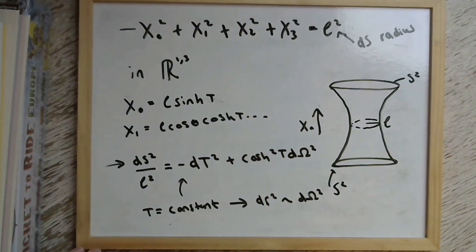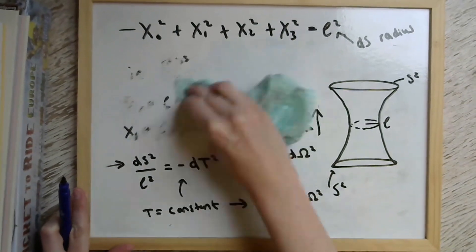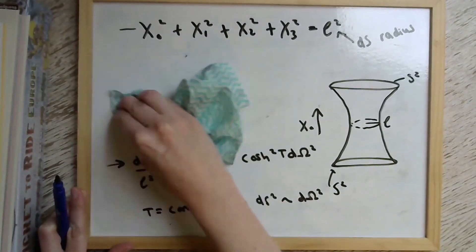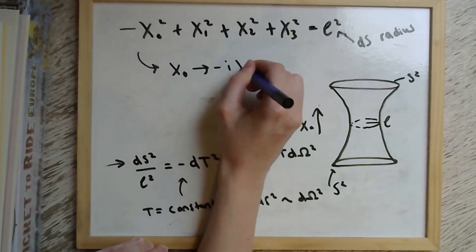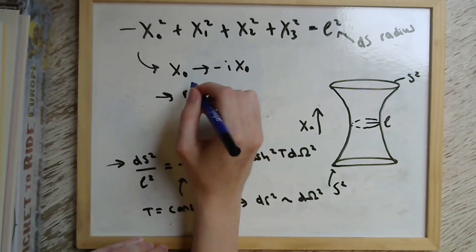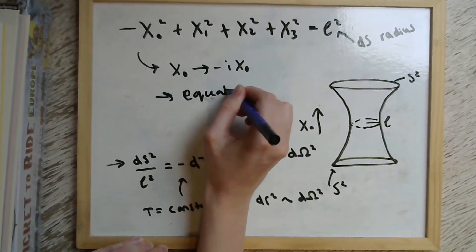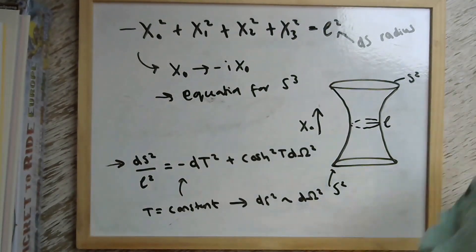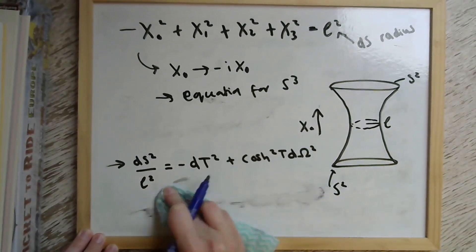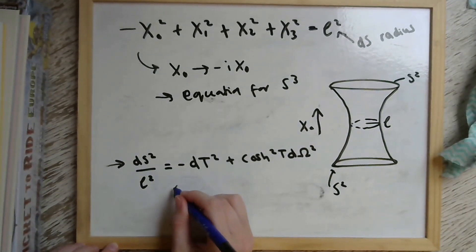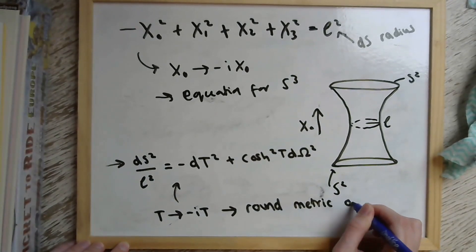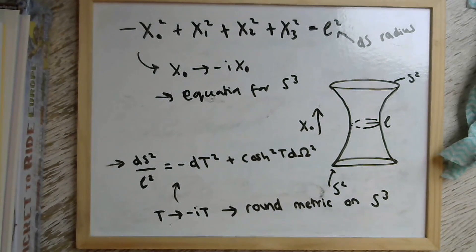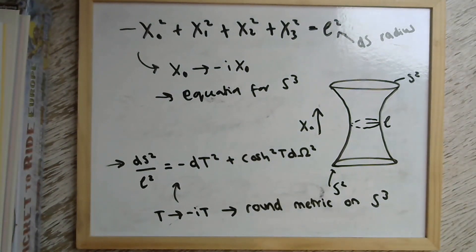So we can also look at what happens if we Wick rotate de Sitter space. So we want to describe in Euclidean signature. And if we do that, so in the embedding space picture, this means taking this X₀ coordinate to be -iX₀. And then we immediately get the equation of a three sphere if we do that. As we can see, and we can do a similar thing in the metric description of global de Sitter, which is if we take this capital T to -iT, we also get the round metric on the three sphere. So that's a nice sanity check. And so we can see that Euclidean de Sitter physics in three dimensions is described by the three sphere.